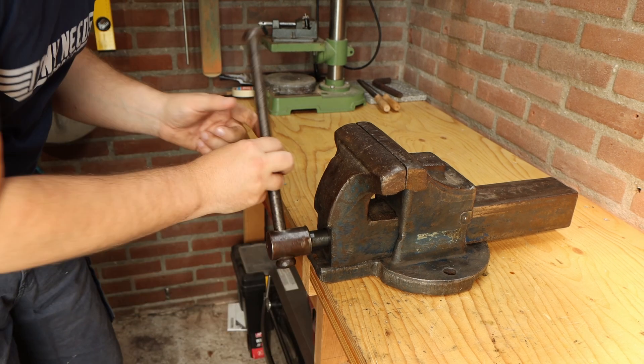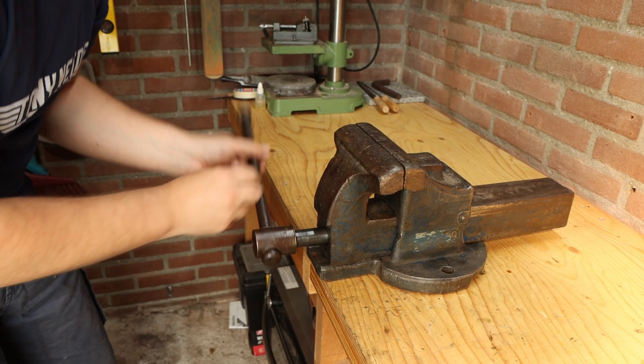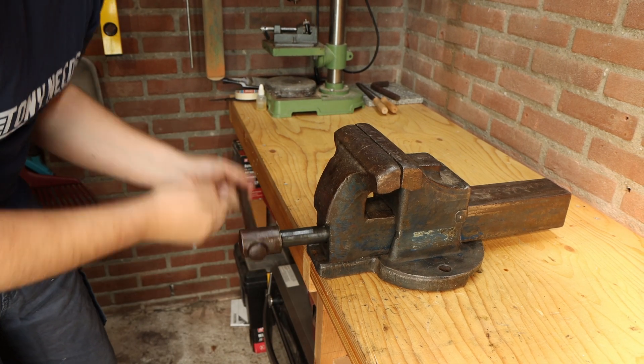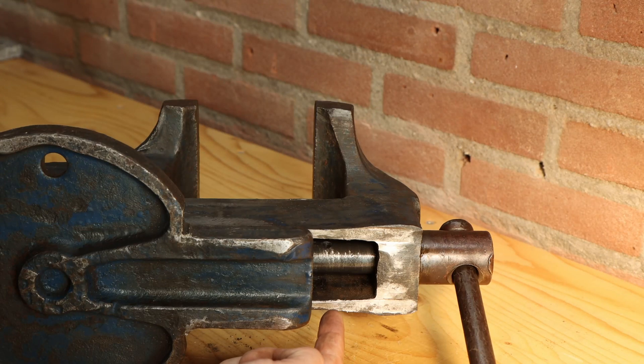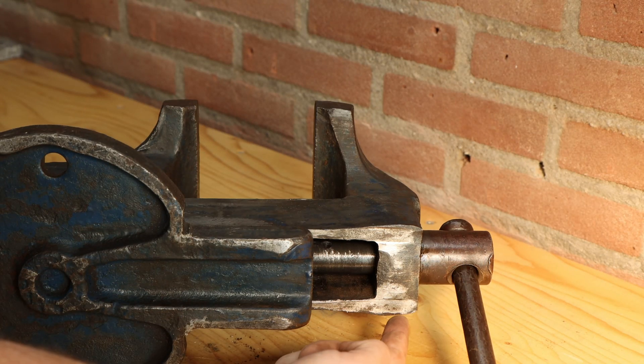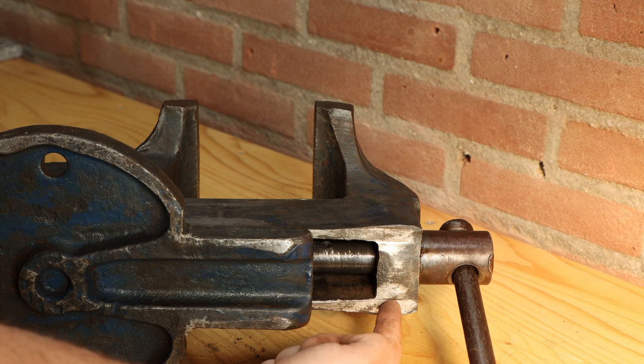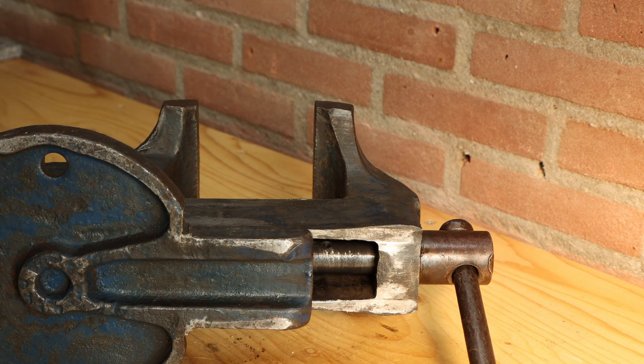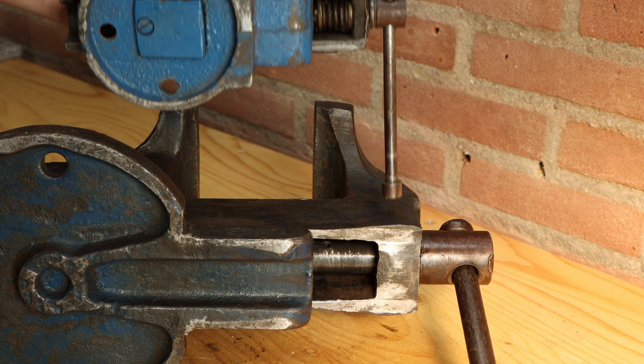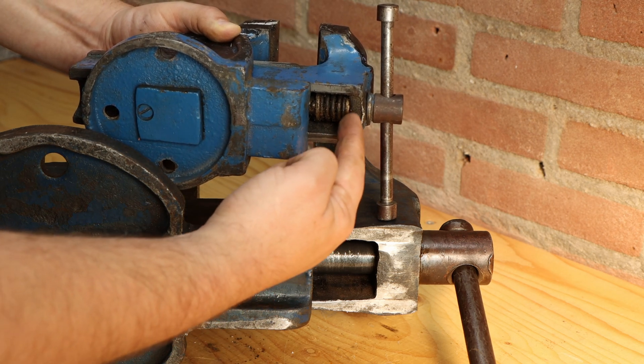As you can see here, when rotating the handle the screw moves outwards but the sliding jaw stays put. The reason that it doesn't move is that a spring is missing over here. Normally there would be a spring holding the screw to the sliding jaw, preventing the screw from moving out without taking the sliding jaw along with it.